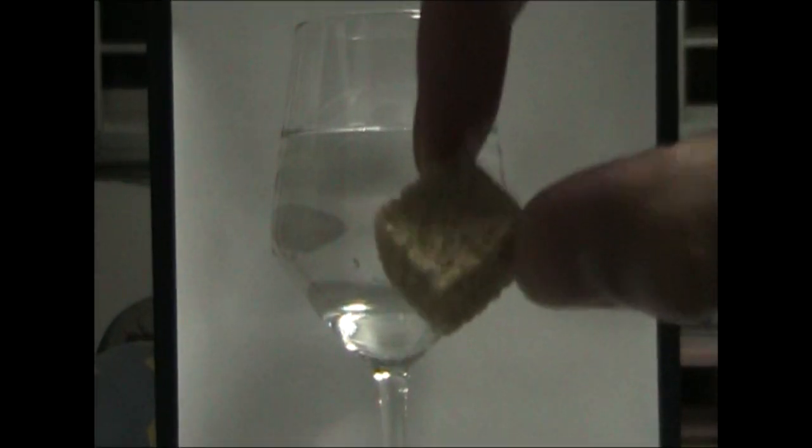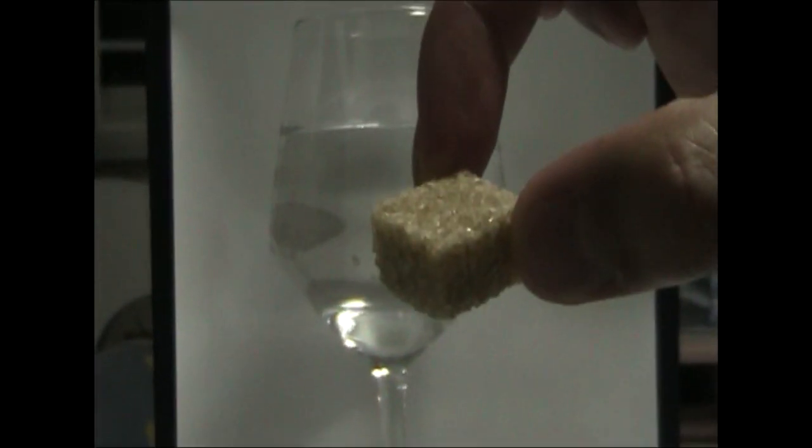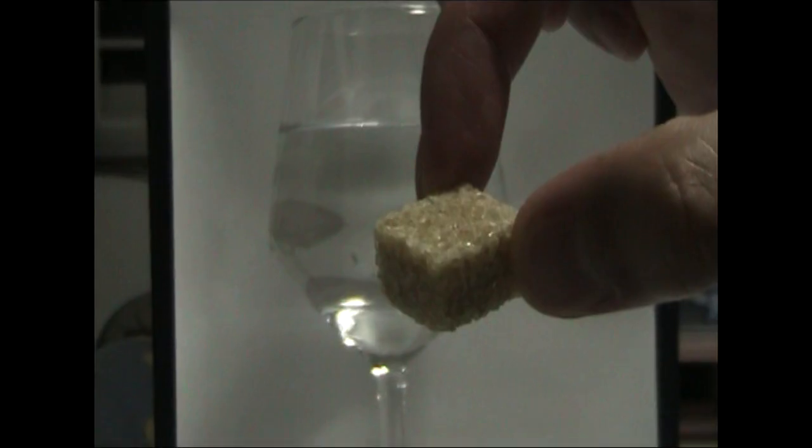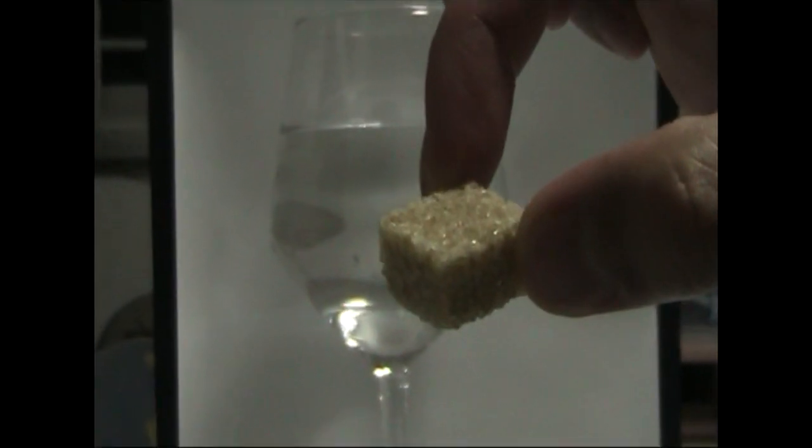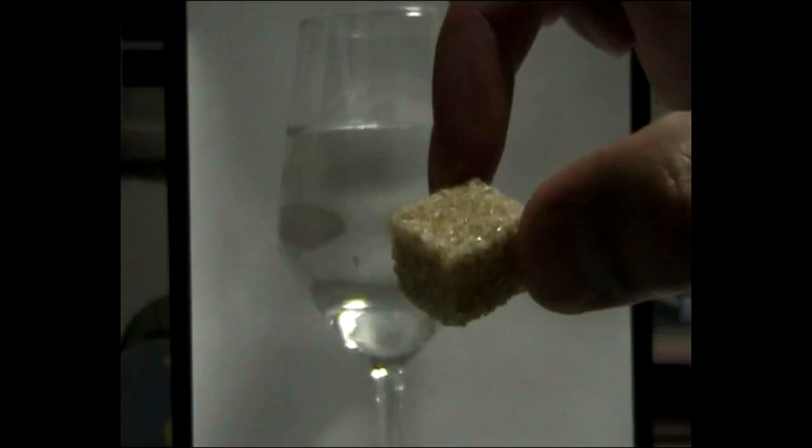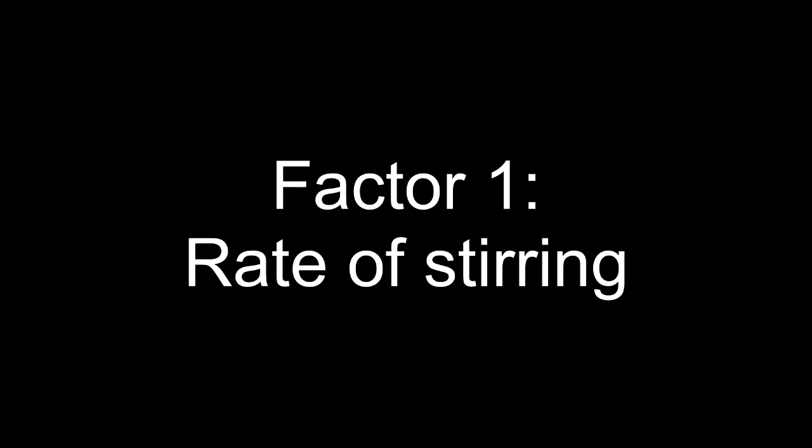Okay, we are going to look at sugar dissolving in water. You may be wondering why the sugar is so strange - it is because this is not normal sugar, this is cane sugar. The first factor affecting the rate of dissolving is the rate of stirring, that means how fast you stir the solution.